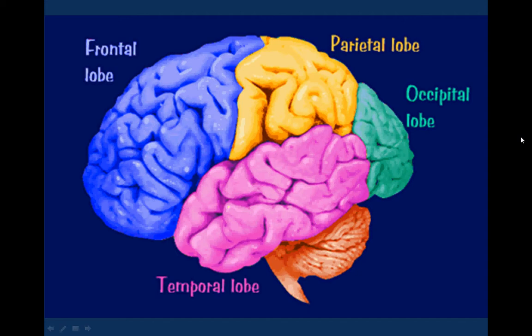The occipital lobe, located in the back of the skull, is part of the visual pathway system. The most posterior portion of the occipital lobe is where a major part of our vision is processed, and destruction of this part can cause what's called cortical blindness.